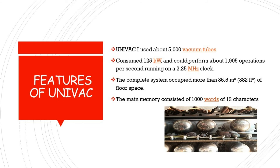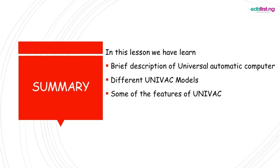Before we end this lesson, let's do a recap of what we have learned. In this lesson, we learned a brief description of Universal Automatic Computers and when they were invented. We also looked at the different UNIVAC models: UNIVAC 1, UNIVAC 2, and UNIVAC 3, and the differences between Universal Automatic Computer 1, 2, and 3. Lastly, we also looked at some of the features of UNIVAC.